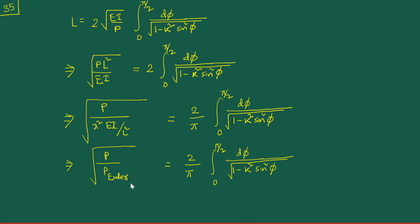Hello everyone. In the previous video we had stopped at a certain point in our solution of the pinned-pinned beam under axial load. Some of you may be wondering whether we had actually achieved our goal of finding the critical load. As mentioned, our goal was twofold: first to find the critical load, and then to find the deflection. This video will be about finding the deflection, but I just want to go back and clarify the step we had found at the end.